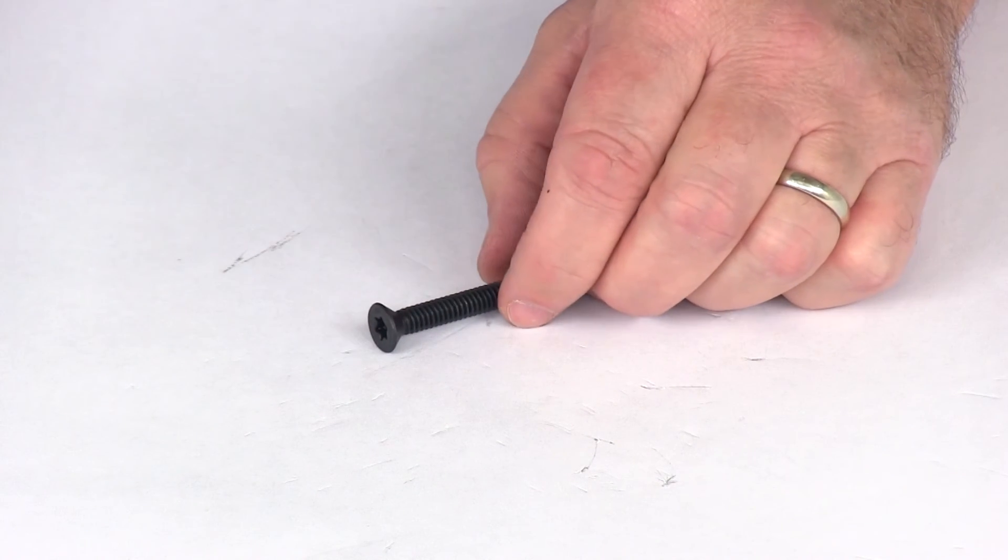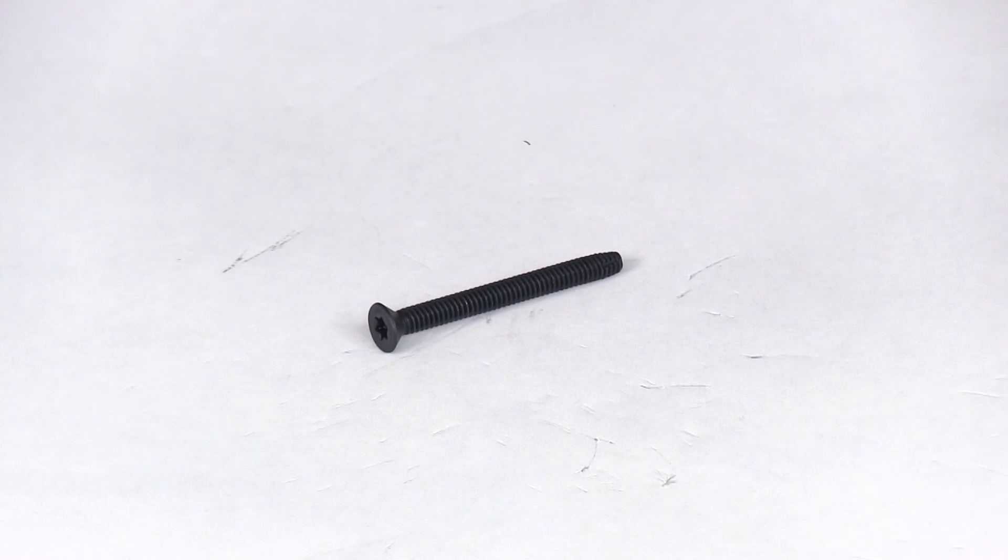That should do it for the review of the two and a half inch long standard Torx trailer floor and wall liner screw.